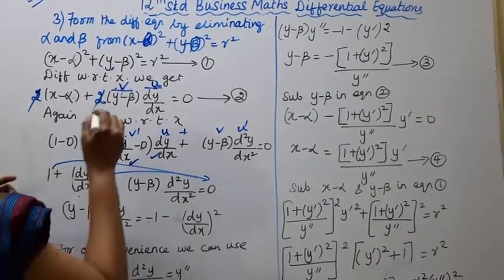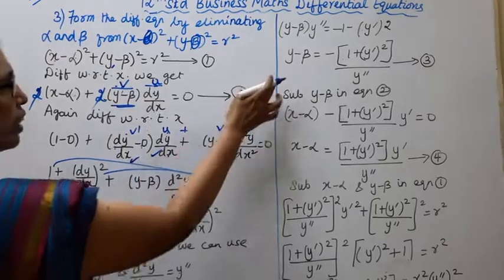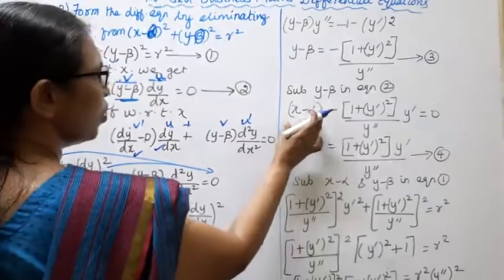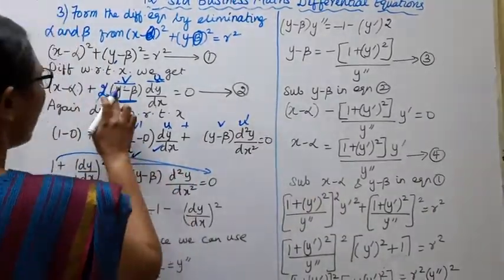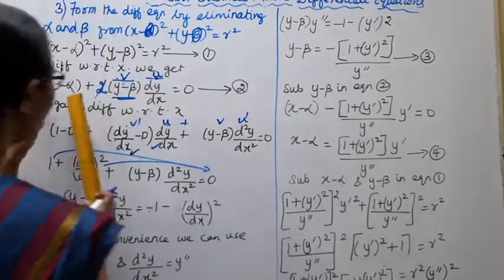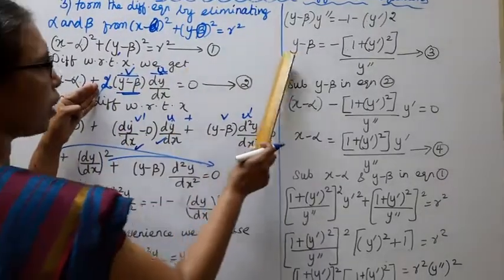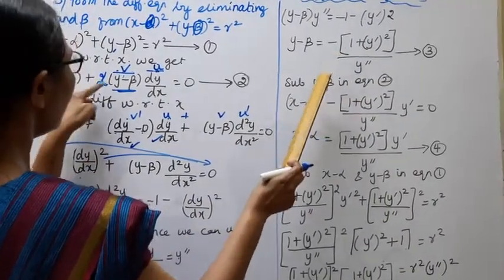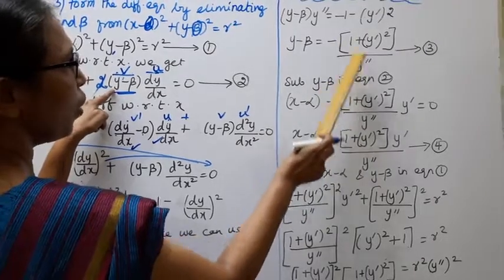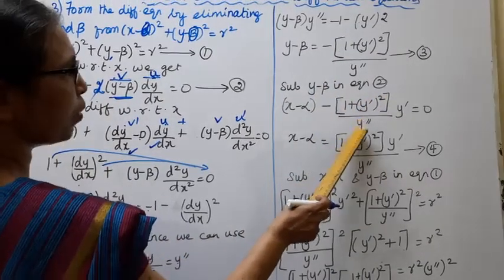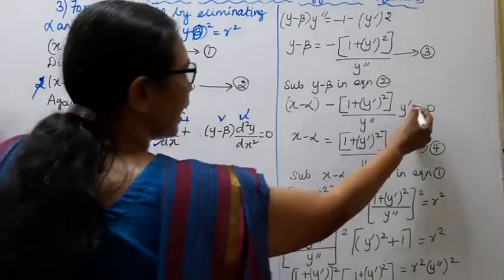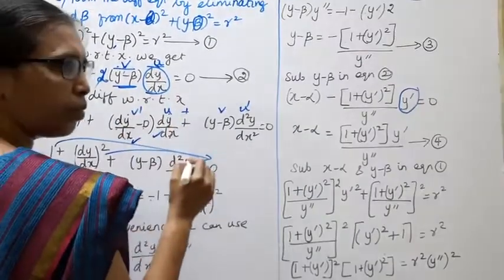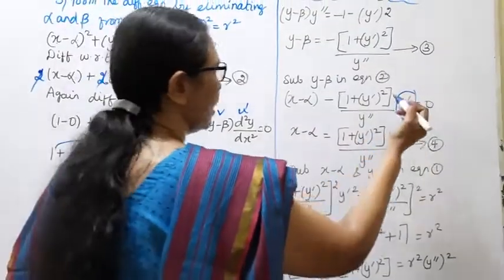This gives the value of y − beta. Substituting this value of y − beta into equation 2: x − alpha + y − beta·(dy/dx) = 0. Therefore x − minus alpha = [1 + y'²] / y'', and y − beta expressions follow. So dy/dx = 0 leads us to the substitution.